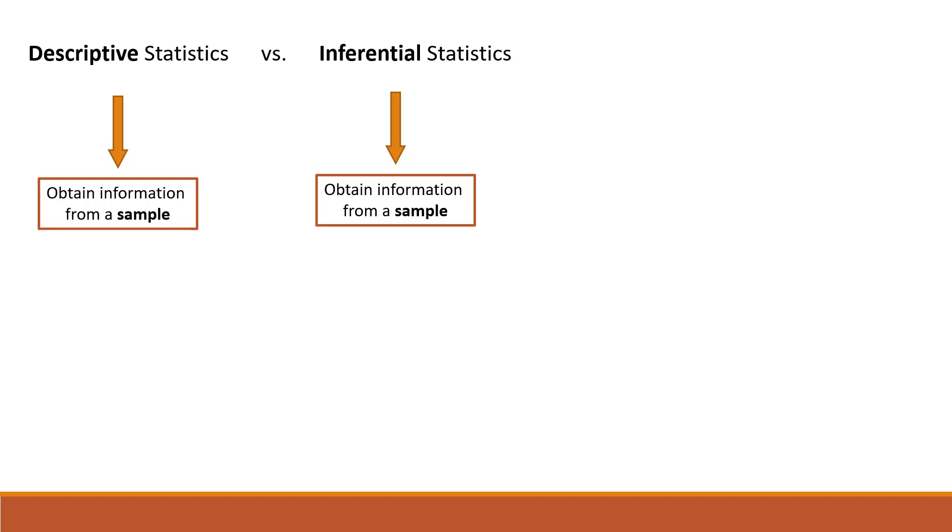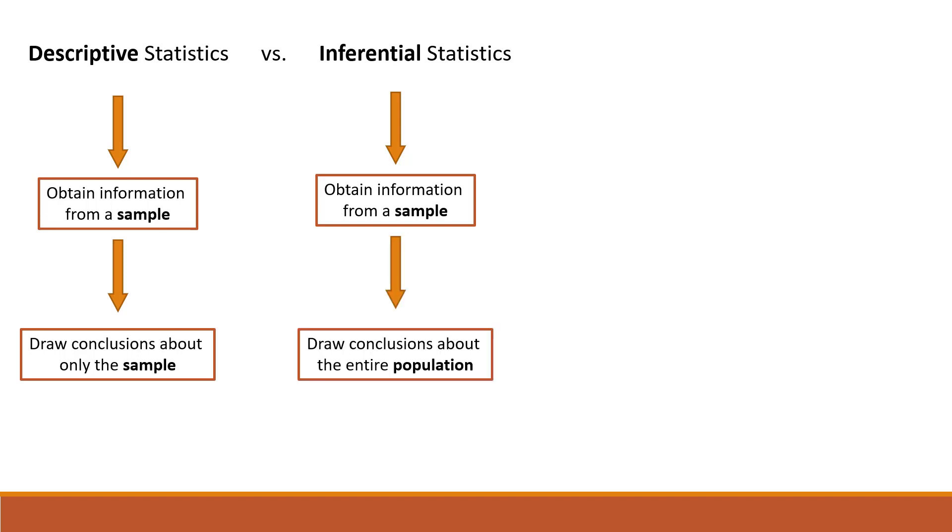When we perform descriptive statistics, we draw a conclusion about only that sample. On the other hand, when we perform inferential statistics, after we obtain the information from a sample, we extend the result to the entire population. So we draw a conclusion about the entire population based on the information from a sample.